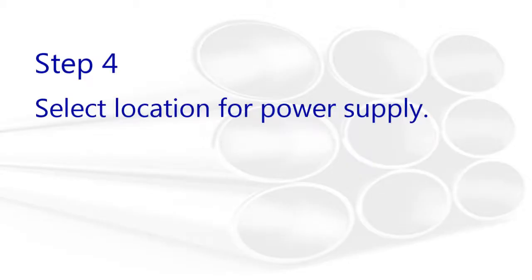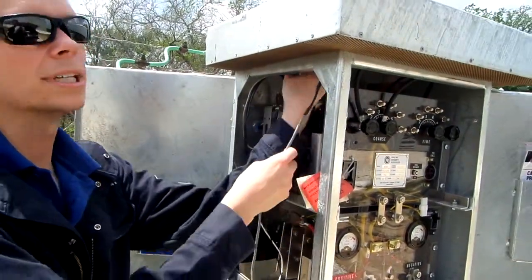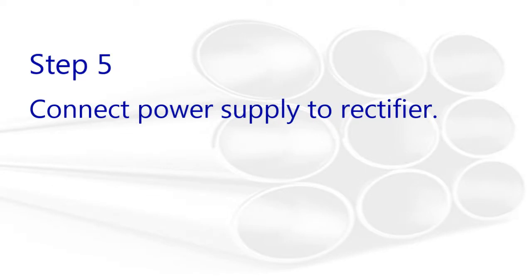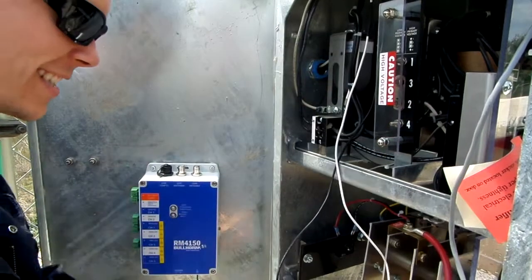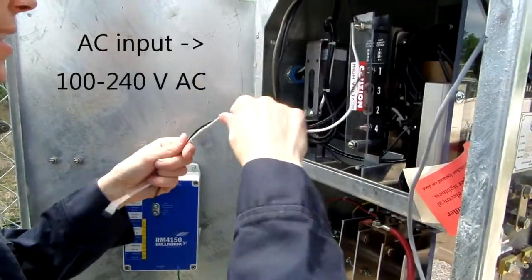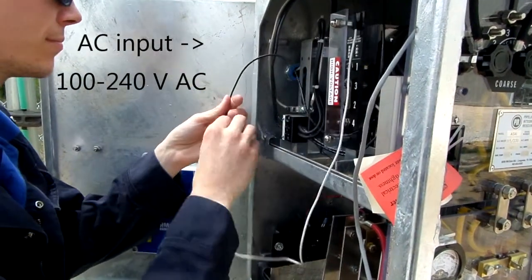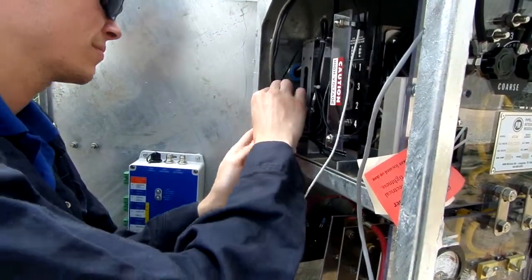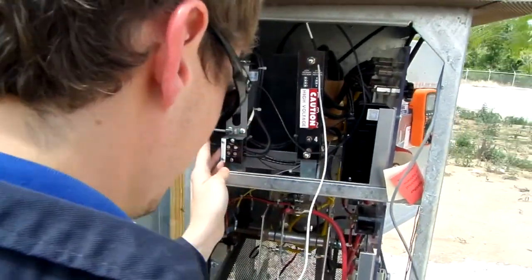Select a location where the power supply will be installed. This location should also be easily accessible. Connect the power supply to the rectifier. If you are using an AC to DC power supply, connect the power supply's AC input cable to a 100 to 240 volt AC supply or breaker. A DC to DC power supply can be purchased from American Innovations if an AC power source is not available.